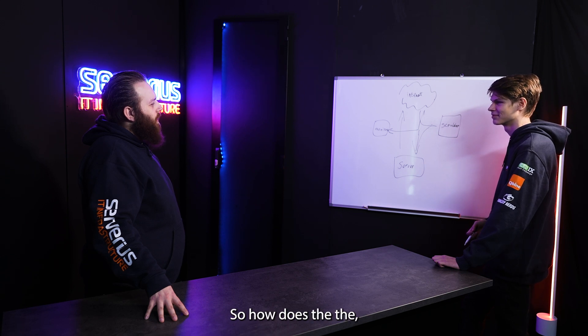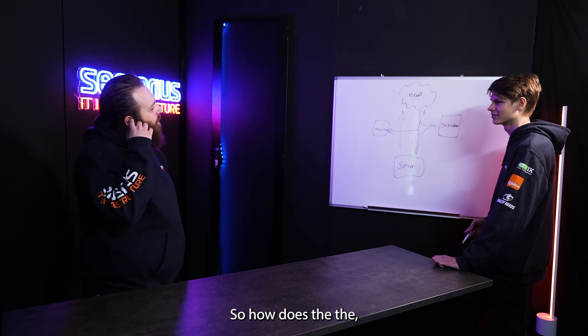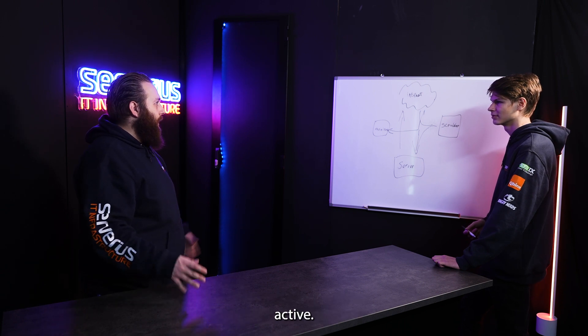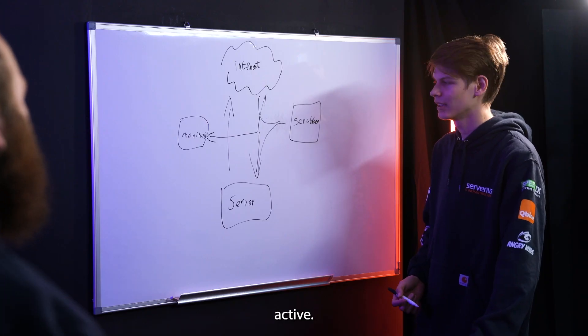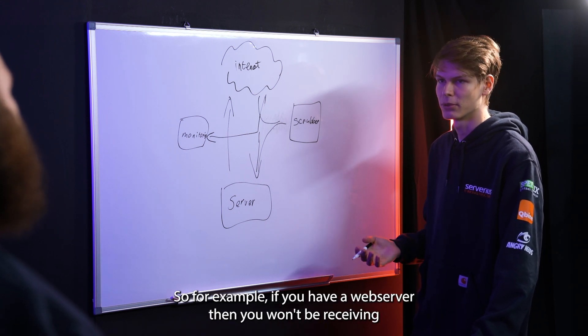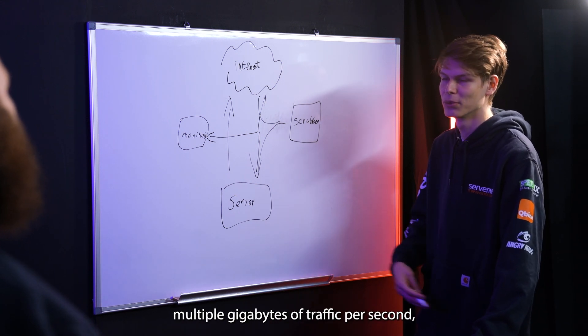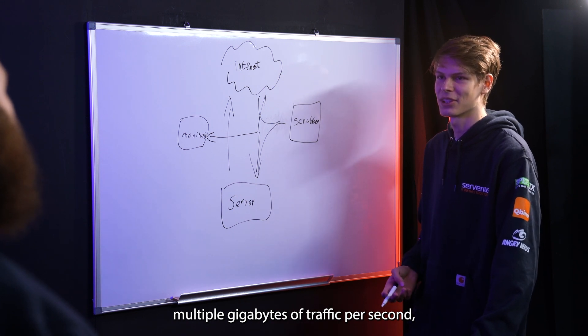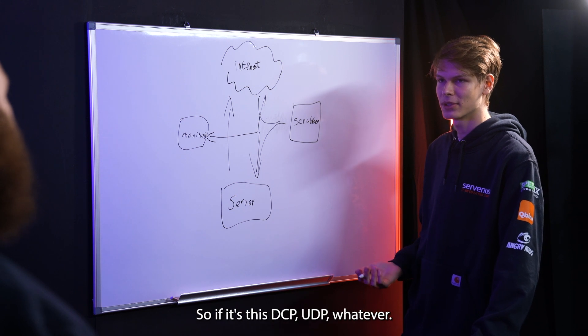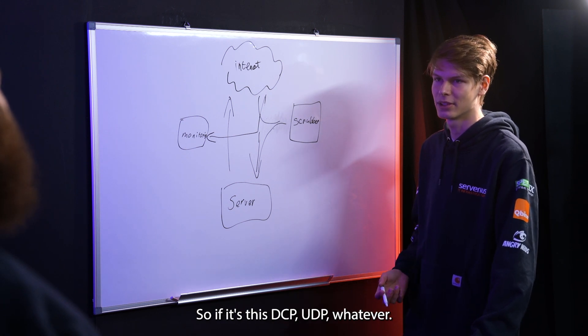So how does the monitoring system know that an attack is active? It looks at normal traffic patterns. For example, if you have a web server, then you won't be receiving multiple gigabytes of traffic per second. It will also look at the type of traffic - TCP, UDP, whatever.